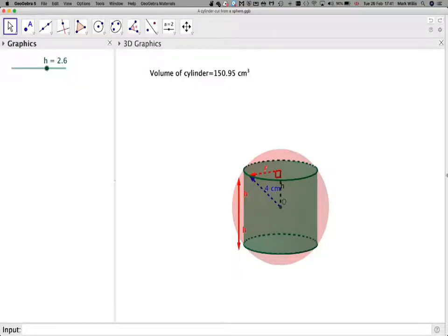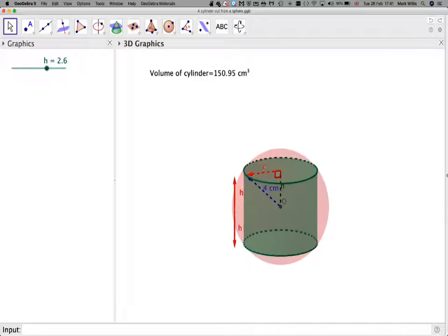So here we have our GeoGebra app. Basically what we've got here is we can see we have a cylinder inside a sphere and we're going to cut this cylinder from the sphere. It's a three dimensional model.